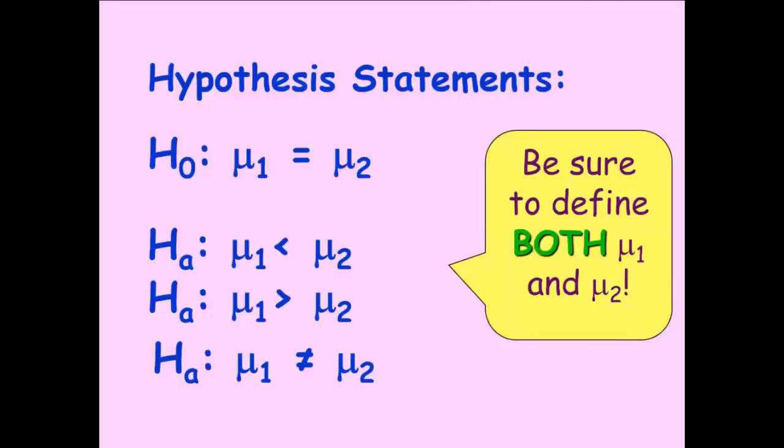And then when we're setting up our hypothesis statement, we still want it to define what the μ one and μ two represent. So in context, what does the mean of the first sample and what does the mean of the second sample really mean? And all of those statements are sort of interchangeable, whether we subtract the difference or just come out and say that μ one is equal to μ two. Both forms are acceptable.